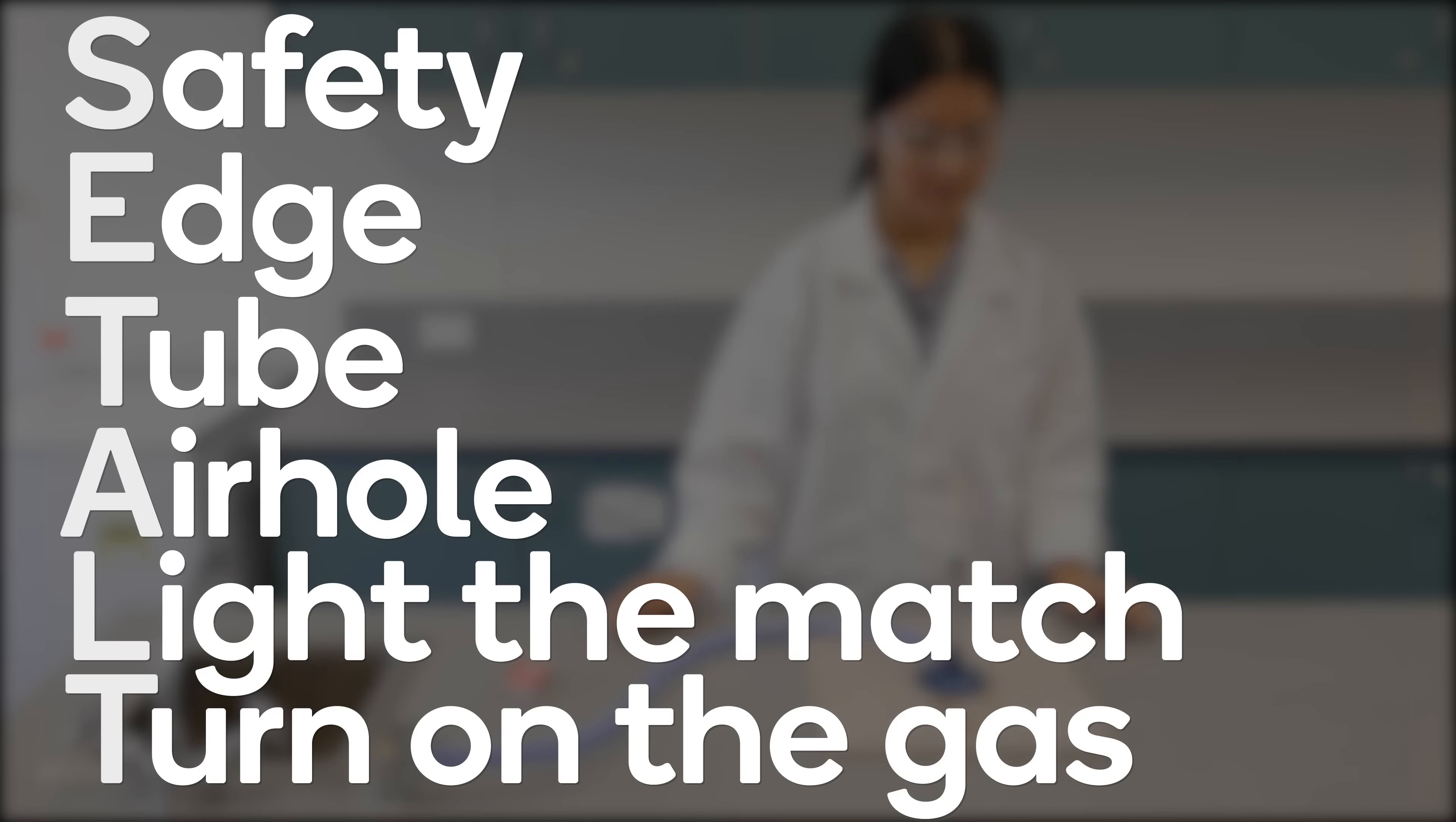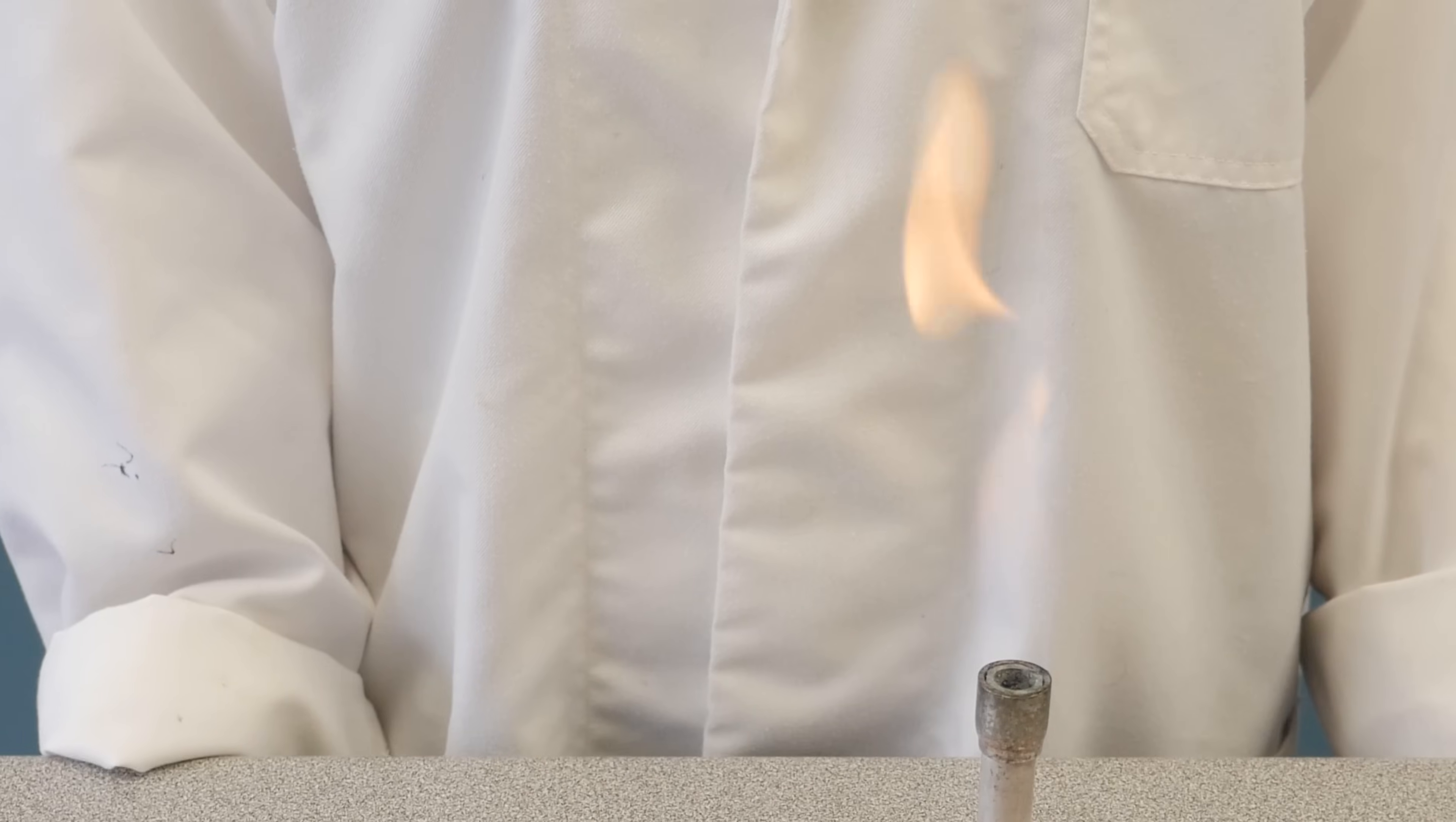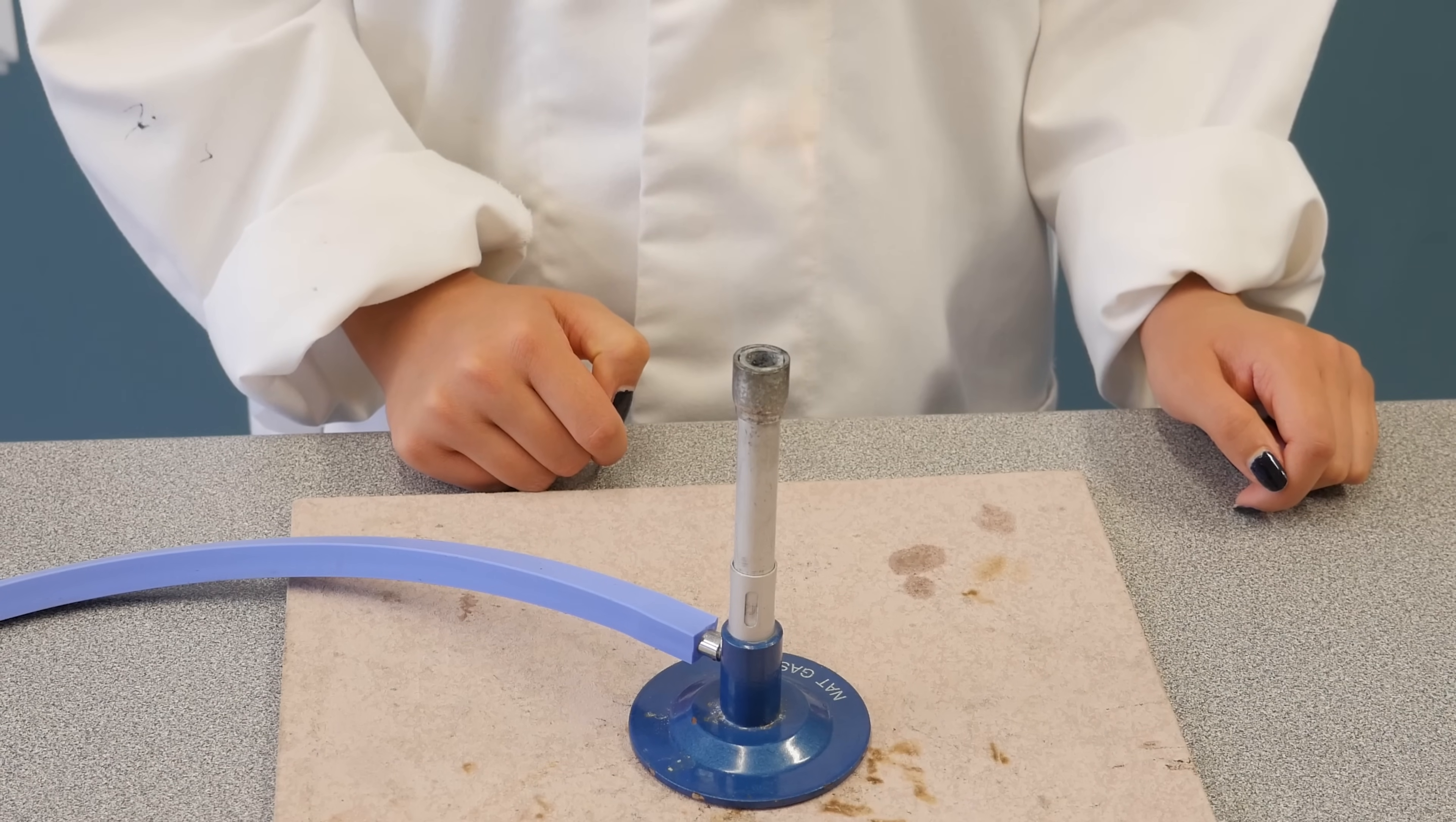You should always follow these six steps when lighting a Bunsen burner. Now you've successfully lit the Bunsen burner, you should begin with a bright yellow flame. This is called the safety flame because it's easy to see and isn't as hot as the full flame.